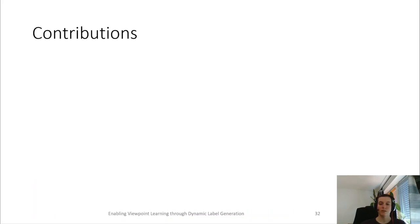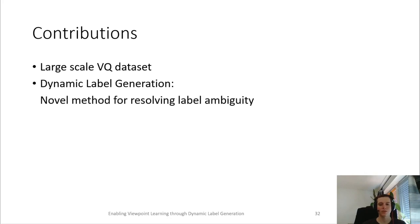To summarize our contributions, we provide the first large-scale view quality dataset, which contains view quality annotations for eight different object categories and four different view quality metrics. We present a novel dynamic label generation method, which can resolve label ambiguity, outperforms existing methods, and can be applied to any learning problem which involves label ambiguity.